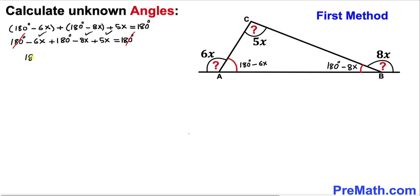So we are ended up with 180 degrees minus 9x equal to 0. And now let's move this negative 9x on the other side. So we got 180 degrees equal to 9x.